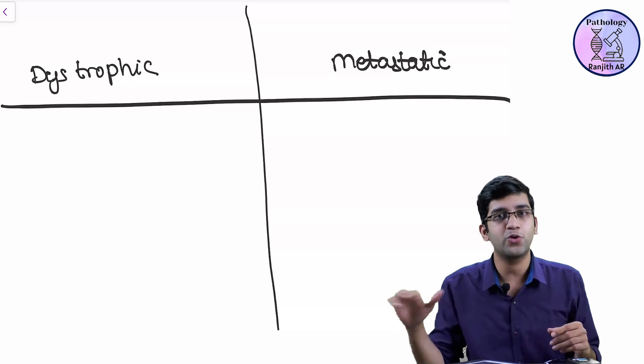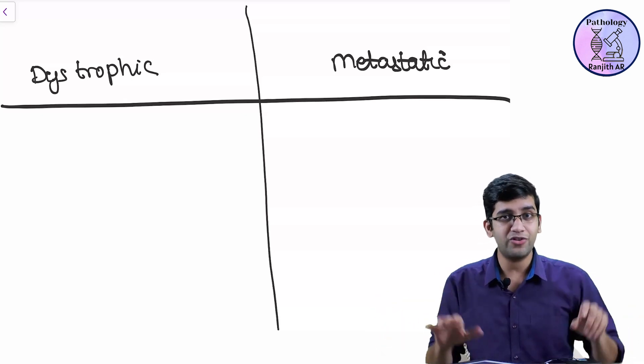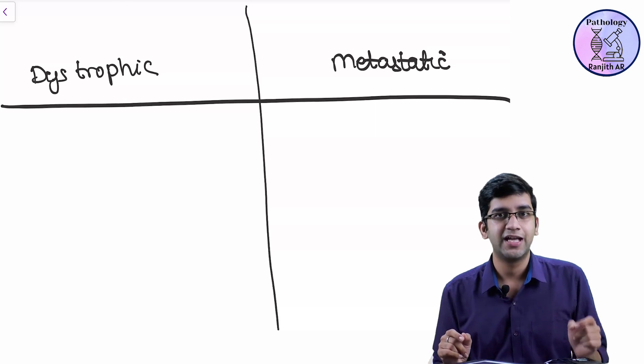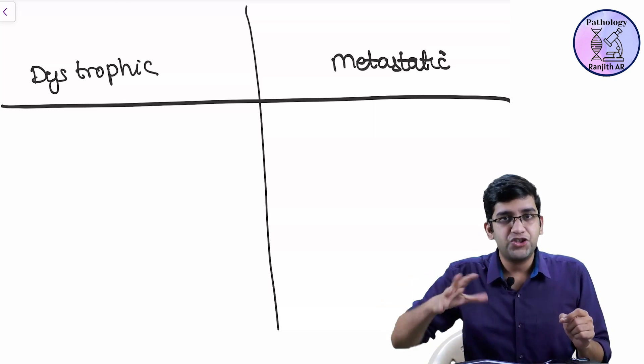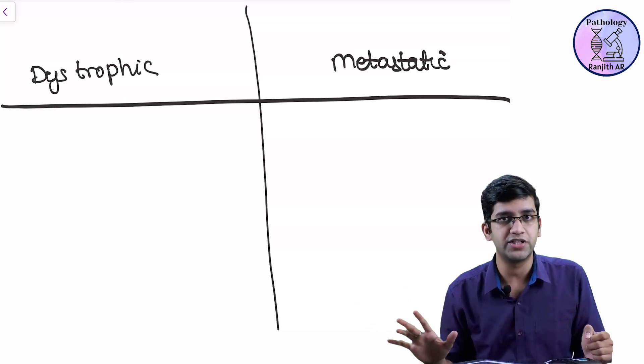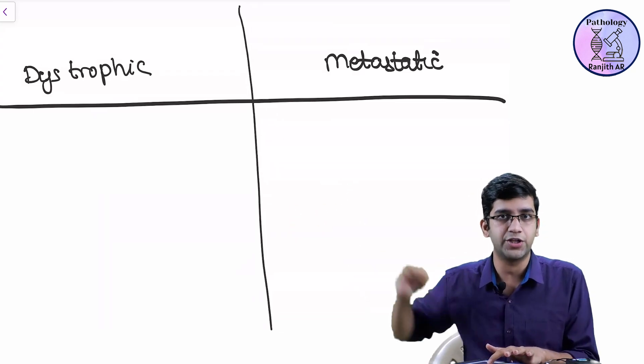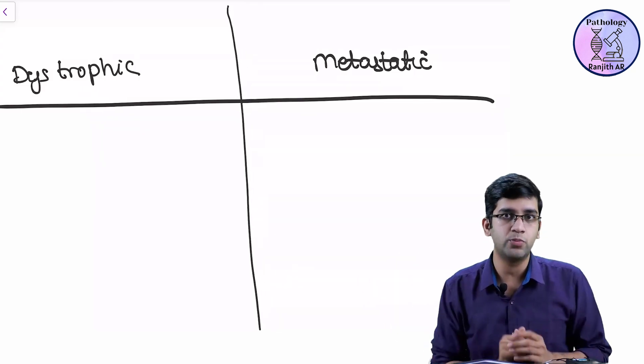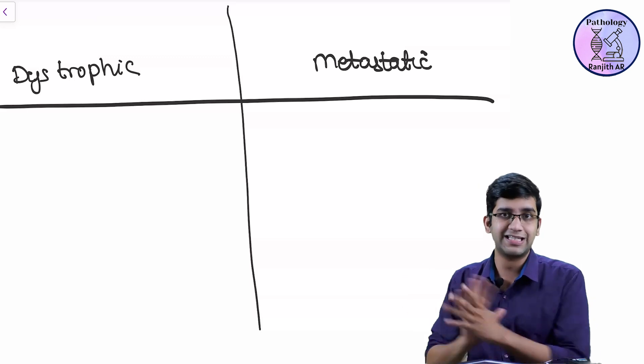What is static? Homeostasis. Simple. Don't put your pens down, listen to me. Metastatic means there's a change in the calcium homeostasis - because we are talking about calcification. There's a change in the calcium homeostasis that causes metastatic calcification.